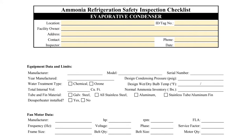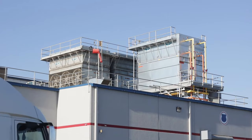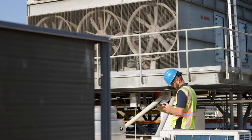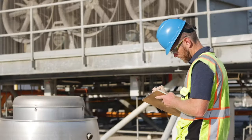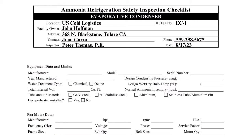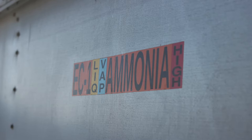The simplest part of completing the condenser checklist is filling out the contact information. Each IIAR 6 checklist requires the inspector to indicate the location, owner, and physical address of the system. The contact's name and phone number should be the facility representative responsible for ensuring the inspection is completed. Additionally, the inspector must write his or her own name and the date of the inspection. The ID or tag number belongs in the upper right corner and can typically be found on the equipment label or P&ID.